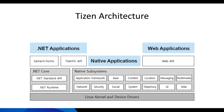Let's take a look at the Tizen architecture. When you're going to create applications with Tizen, you are going to have three different options, three different frameworks that you can choose from. The first one is native applications. Native apps are written in C or C++, and the main advantage is that they have direct access to the Tizen native APIs.